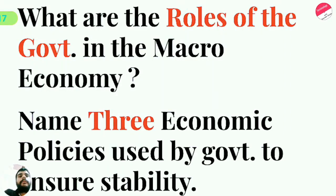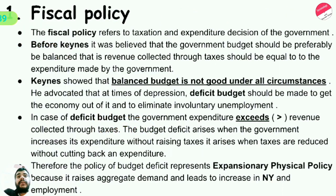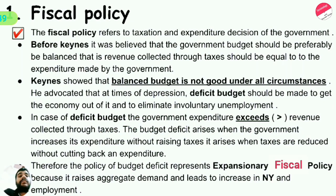What are the roles of the government in the macro economy? Name three economic policies used by the government to ensure stability. There are three economic policies. The first is fiscal policy. Fiscal policy refers to taxation and expenditure decisions of the government.